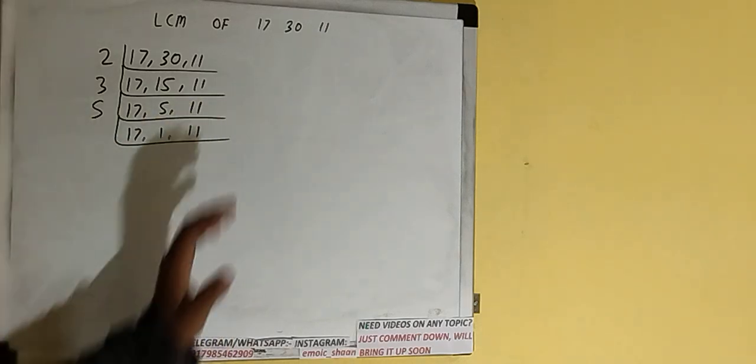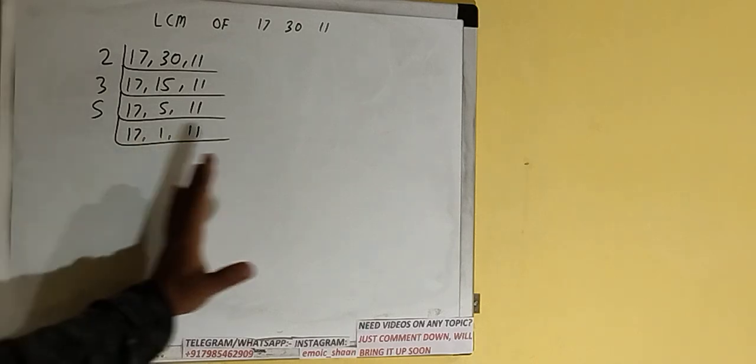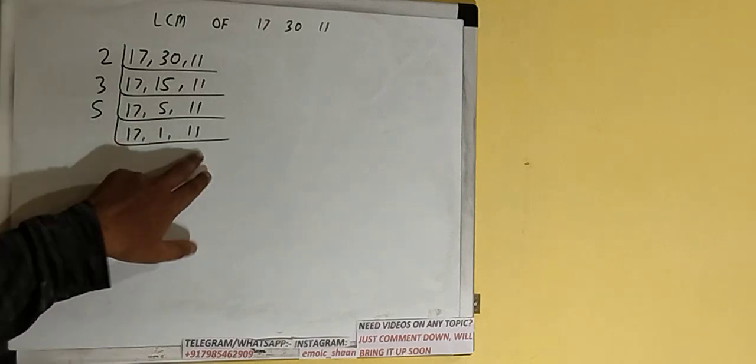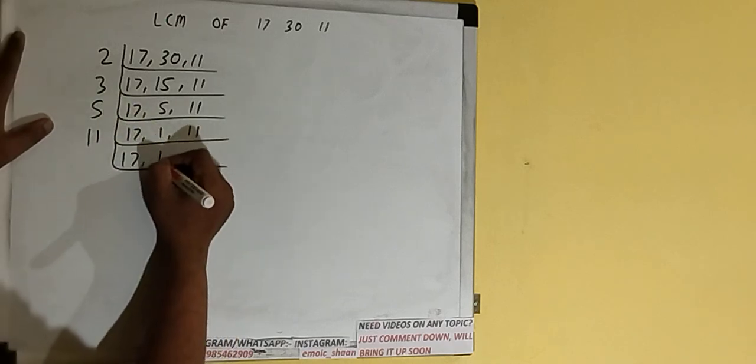None of the numbers are divisible by 5 either, so we check with the next lowest prime number, which is 7. With 7 also, none of the numbers are divisible, so we check with the next lowest one, which is 11. The third number is divisible by 11, so we divide and we'll have 17, 1, 1.